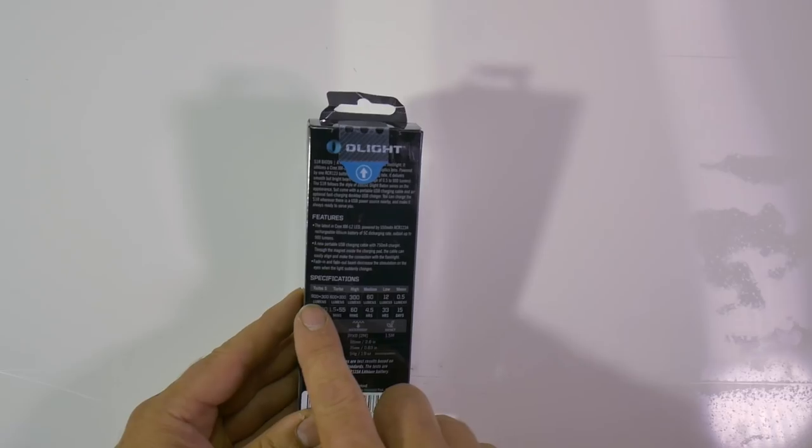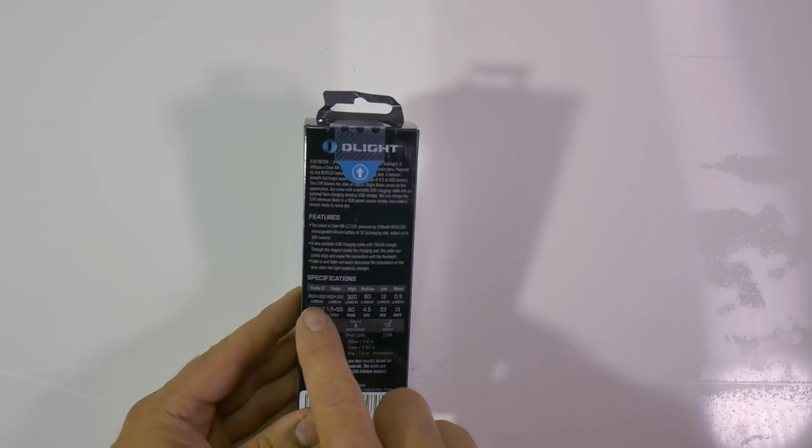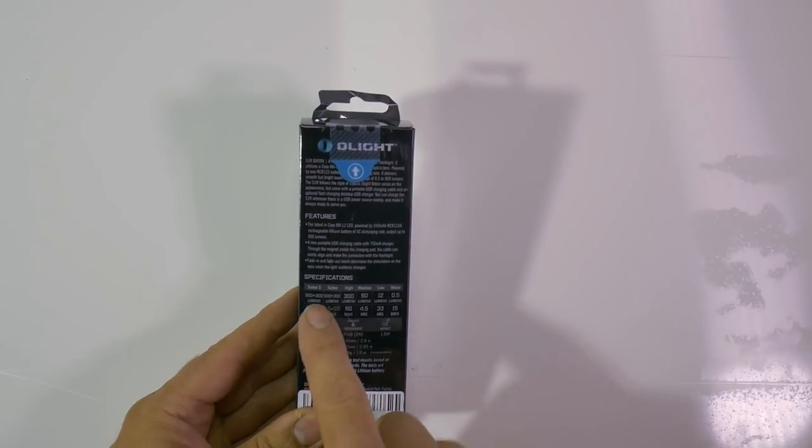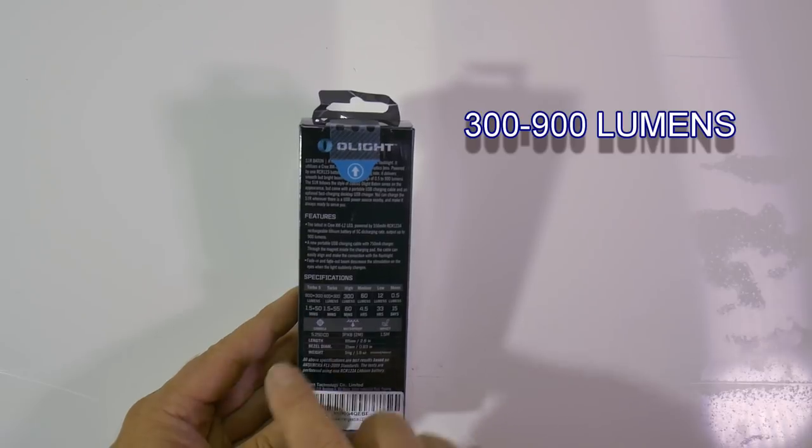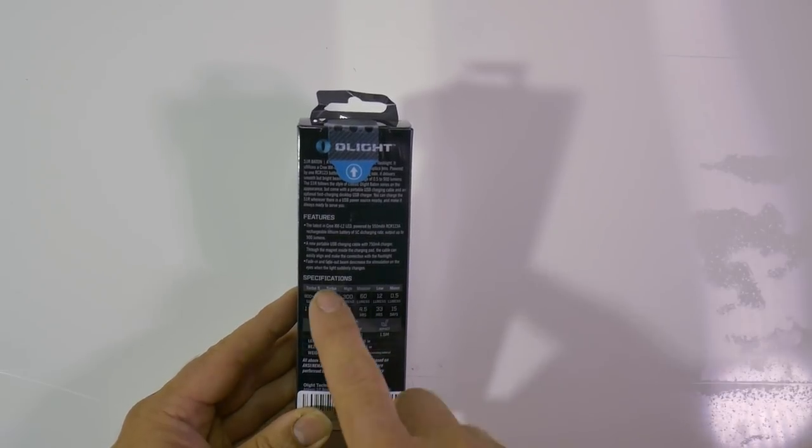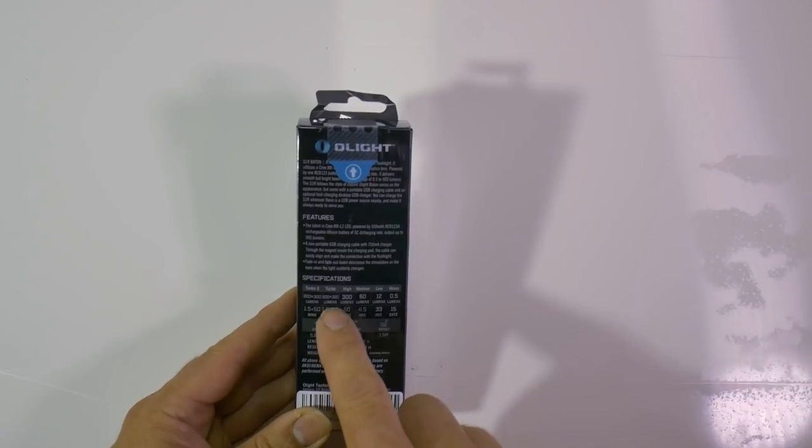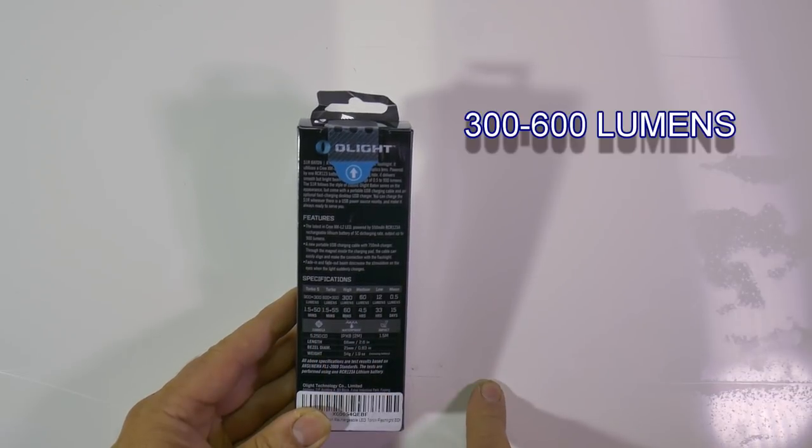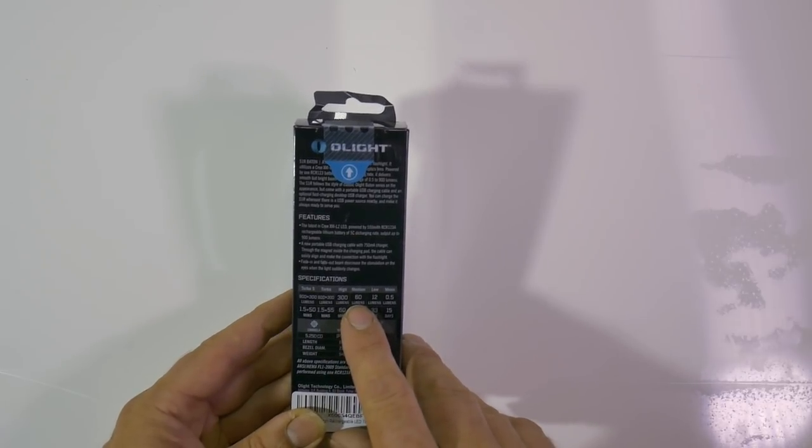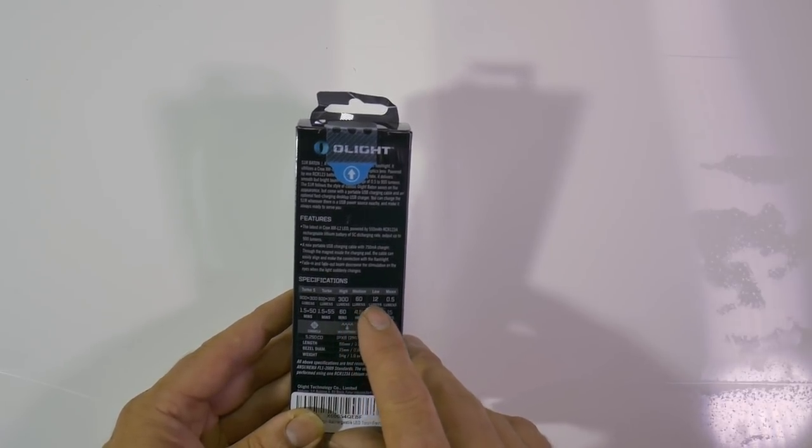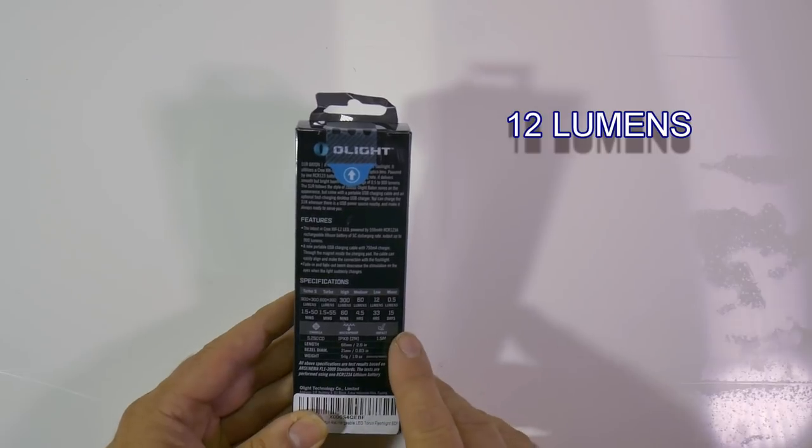We start off with the turbo S, which is 300 to 900 lumens, which I believe it does step down later on. You have a turbo setting as well which is 300 to 600. You have the high which is 300, medium 60, low 12, and the moonlight setting which is just 0.5 lumens.